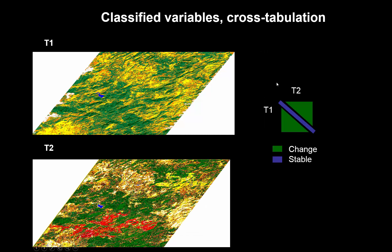Finally, this is an example of cross-tabulation. We have two classified images for two different dates. You can do a matrix where you have the categories for one time on this side and time two on the other side, and you can also see the direction of the changes. In blue, along the diagonal, you see the stable areas where things have not changed at all.